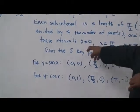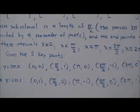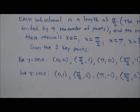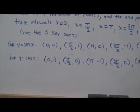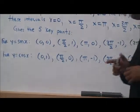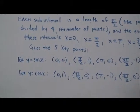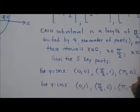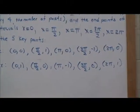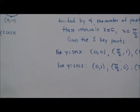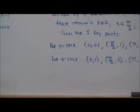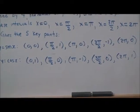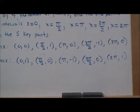The endpoints of these intervals are: x equals 0, x equals pi over 2, x equals pi, x equals 3 pi over 2, and x equals 2 pi. This gives the five key points. For y equals sine x, we have: (0, 0), (pi/2, 1), (pi, 0), (3pi/2, -1), and (2pi, 0). For y equals cosine x, we have: (0, 1), (pi/2, 0), (pi, -1), (3pi/2, 0), and (2pi, 1).